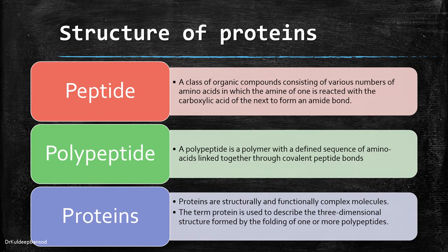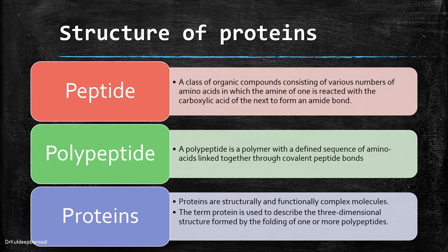A peptide is a class of organic compounds consisting of various numbers of amino acids, in which the amine of one amino acid reacts with the carboxylic acid of the next to form an amide bond or peptide bond. A polypeptide is a polymer with a defined sequence of amino acids linked together through covalent peptide bonds. Proteins are structurally and functionally complex molecules. The term protein describes the three-dimensional structure formed by the folding of one or more polypeptides. So all polypeptides do not necessarily become proteins, but all proteins are polypeptide in nature.